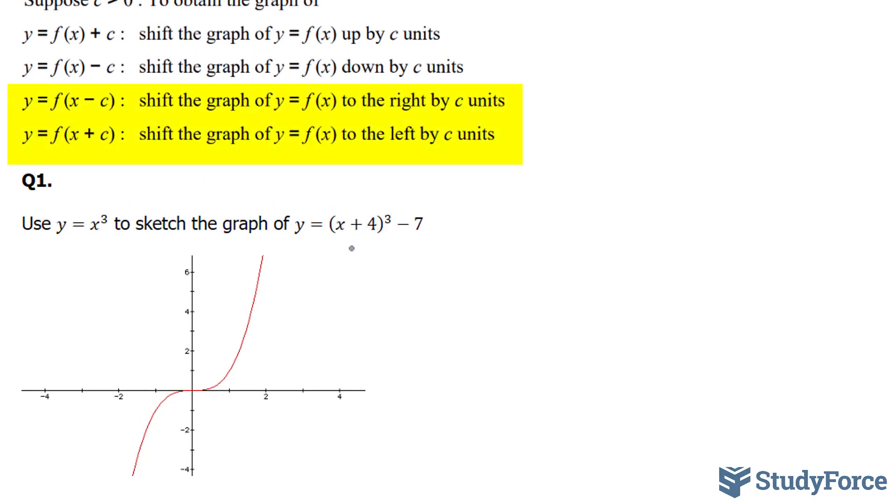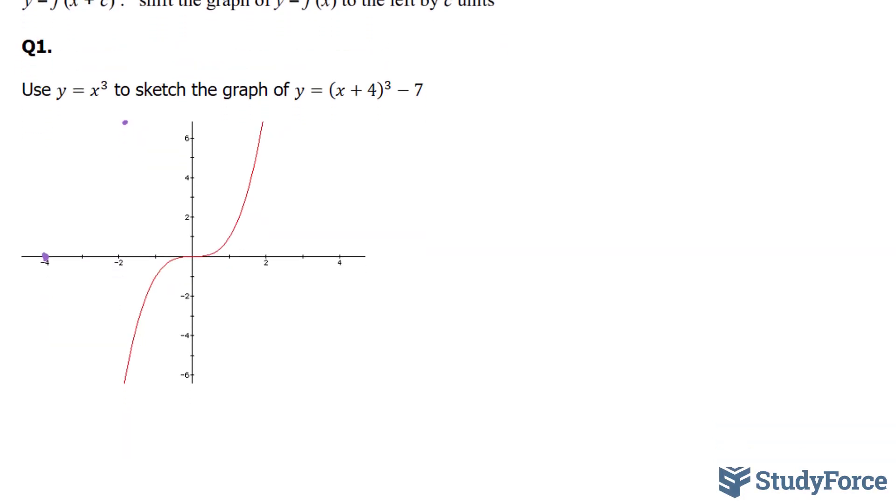If you have a plus 4 here, this suggests that you have to shift every point along the curve to the left. And in this case, it would be by 4 units. So this point right here would be shifted here. Any point along here, let's say this one, will be shifted here and so on. So our graph would begin to look like this.